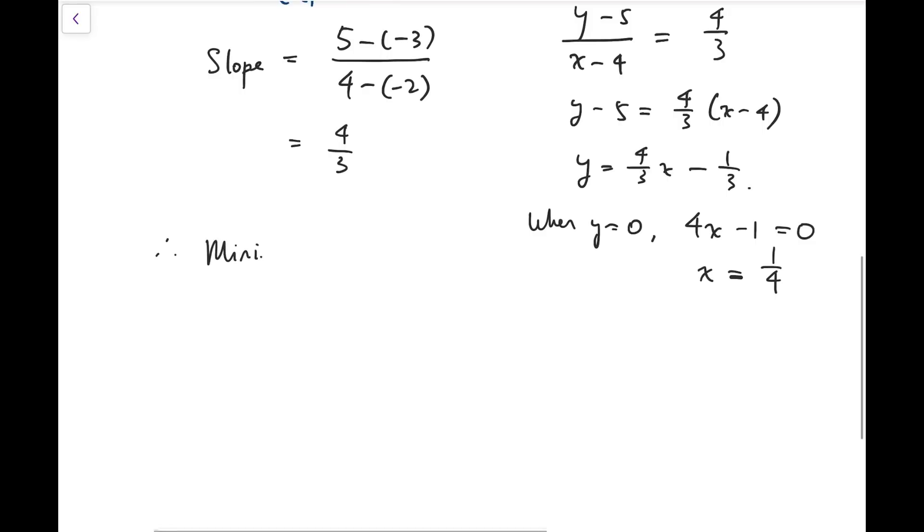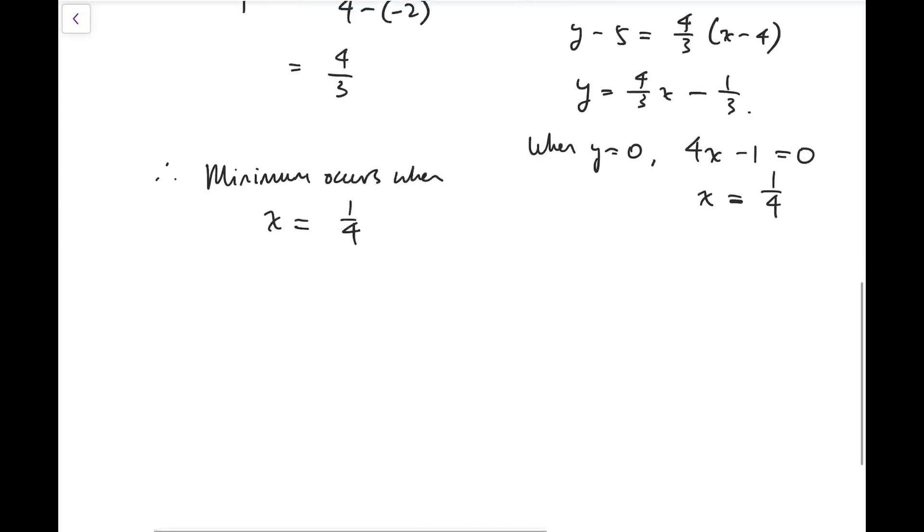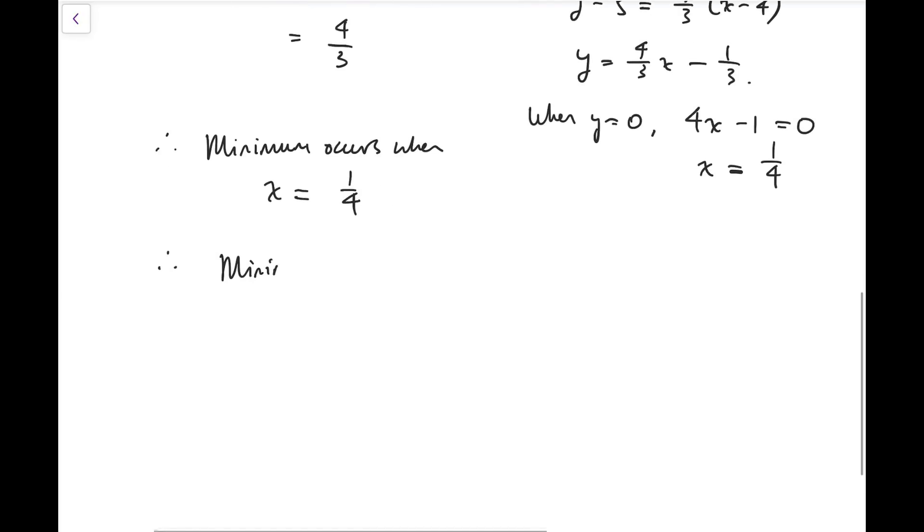So therefore, minimum occurs when x equals 1 over 4. But that's not the end because we need to find the minimum. So therefore, the minimum value of the sum of the two square roots should be, I should recall that to be x plus 2 all squared plus 3 squared plus x minus 4 all squared plus 5 squared. Now I'm going to replace the x by 1 over 4.